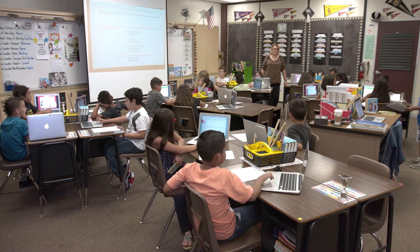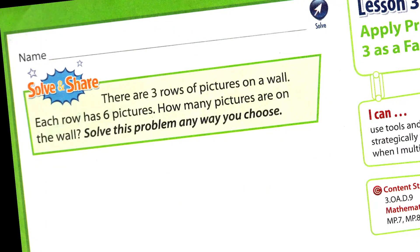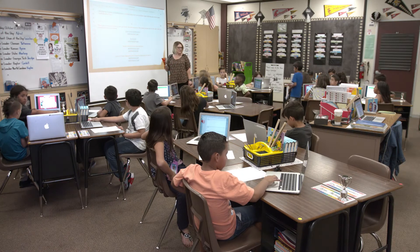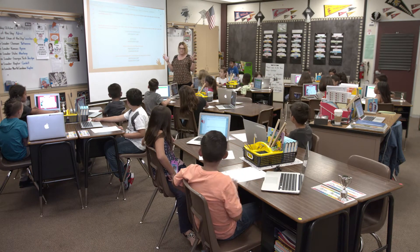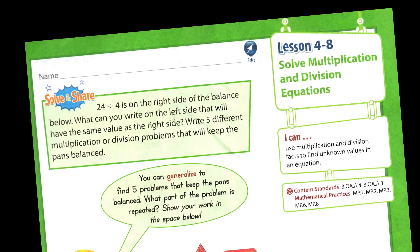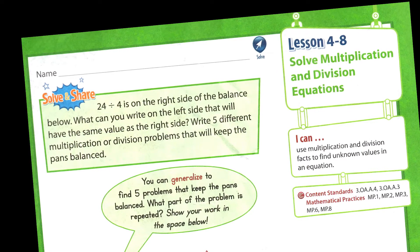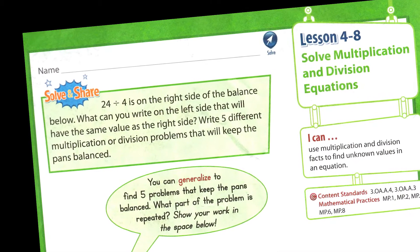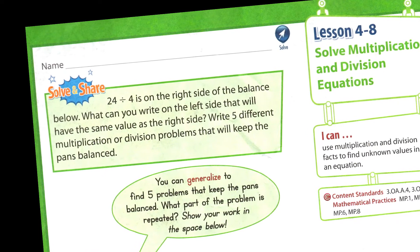Melanie, can you read us the problem very quickly, please? There are three rows of pictures on the wall. Each row has six pictures. How many pictures are on the wall? As soon as I read that, I'm thinking this sounds low level. When you're choosing problems to practice the standards, you really want to look at problems that lend themselves to whatever that standard is. I want to choose problems that give kids opportunities to explain their mathematical thinking and are challenging enough for critiquing each other — problems that really lend themselves to those mathematical conversations.